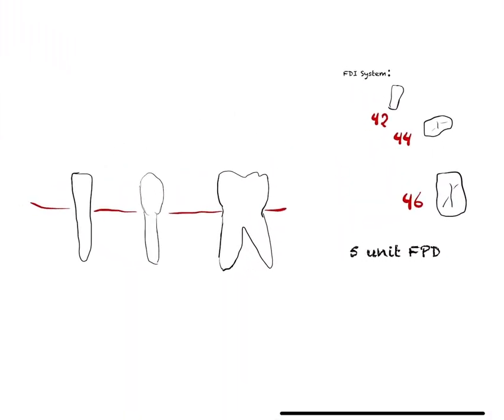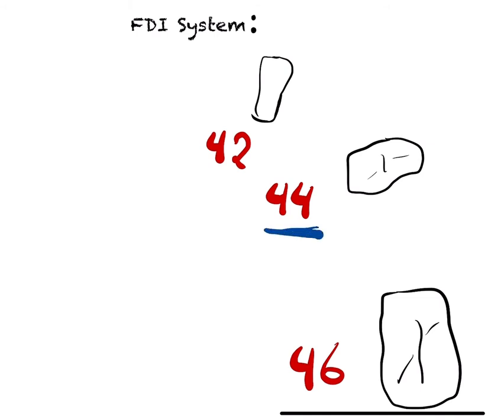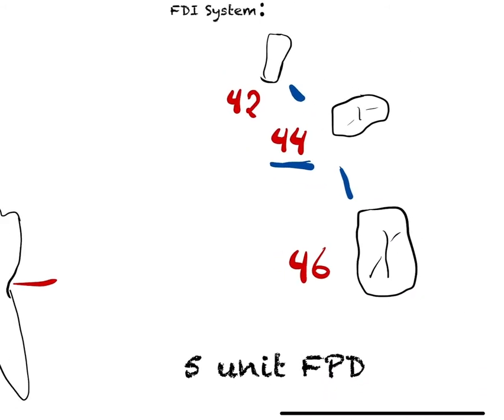Today I'm going to explain the term pier abutment. A pier abutment is this tooth — it's a natural tooth that doesn't have a tooth anteriorly or posteriorly from it. We also call these the terminal abutments: 4-2 and 4-6.